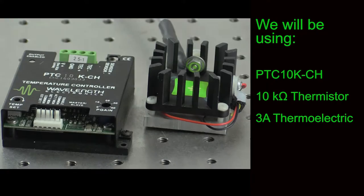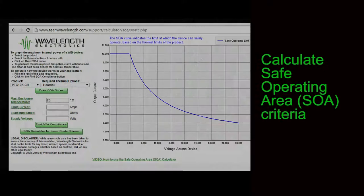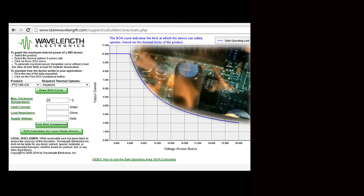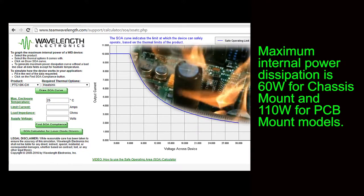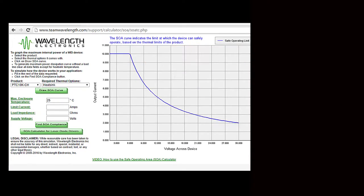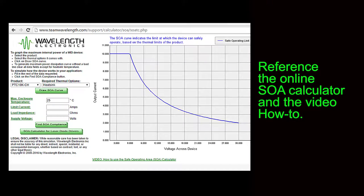We are going to set up a PTC 10K CH to operate using a 10K ohm thermistor and a thermoelectric. Before wiring anything, we need to make sure the combination of power supply voltage, output current and load requirements will not drop too much power across the PTC temperature controller. This cannot exceed 60 watts for the chassis mount version and 110 watts for the PCB mount version. A safe operating area calculator is available online. You may also see our video on YouTube that details how to use the SOA calculator.